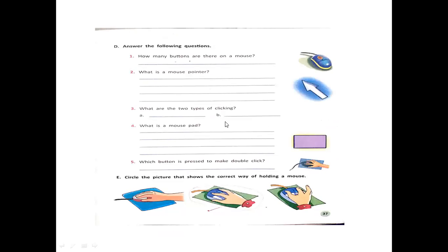Number five: a mouse helps to point things on a computer — Yes, correct. Exercise D: copy it down on your copy. Exercise E: you have to do it yourself — tell the correct way of holding a mouse. On page 38, look at the two pictures given below and describe them. That's all for this video, inshallah.